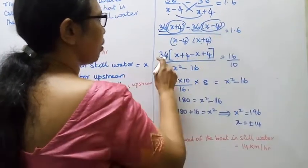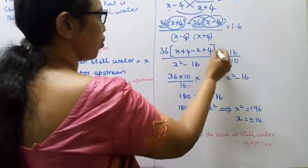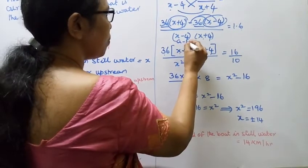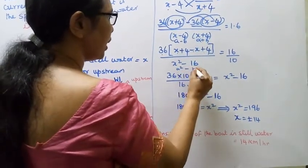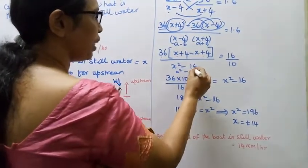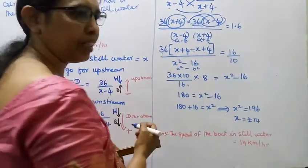Taking out 36, we get 36 times x plus 4 minus x plus 4 divided by x squared minus 16 equals 1.6, which equals 6 by 10.